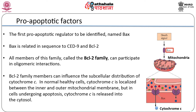Recent studies suggest that BCL2 family members can influence the subcellular distribution of cytochrome c. Biochemical studies have implicated cytochrome c in caspase activation. In normal healthy cells, cytochrome c is localized between the inner and outer mitochondrial membrane. But in cells undergoing apoptosis, cytochrome c is released into the cytosol. This release can be blocked by overexpression of BCL2; overexpression of BAX promotes release of cytochrome c into the cytosol and apoptosis.